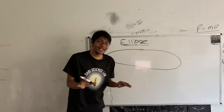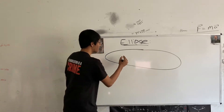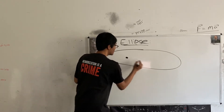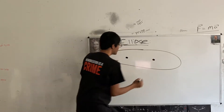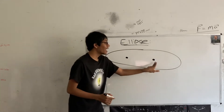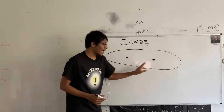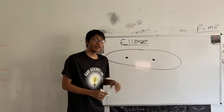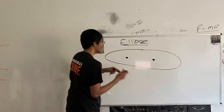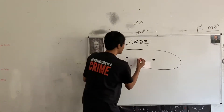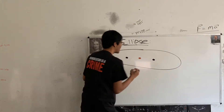Number one, it has two foci. The foci of the ellipse are two dots right over here. And if you take the midpoint of the foci, you're going to get the center of the ellipse. Right here is the center of my ellipse.